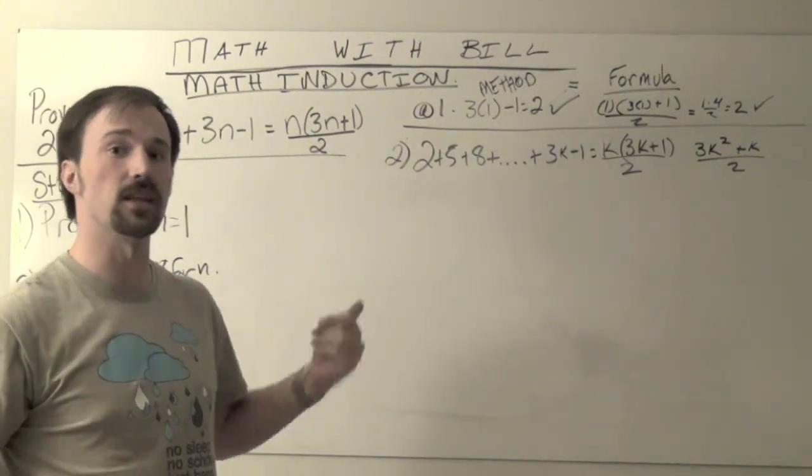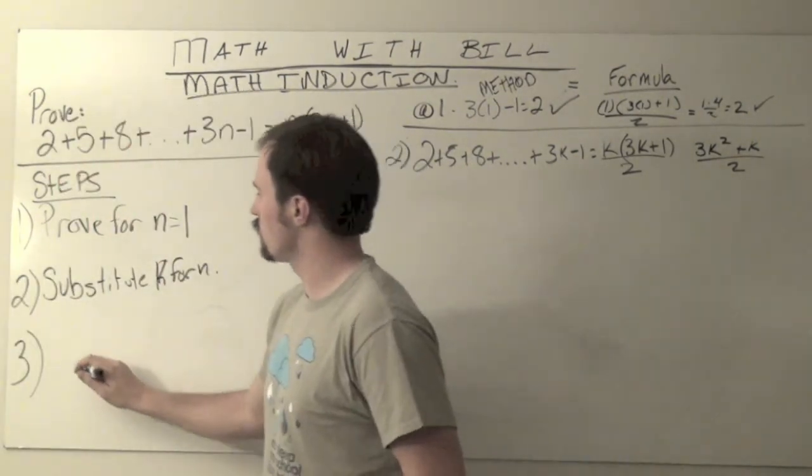What we want is really 3k squared plus k all divided by 2. So I took and multiplied out my numerator. That's going to be really helpful now.